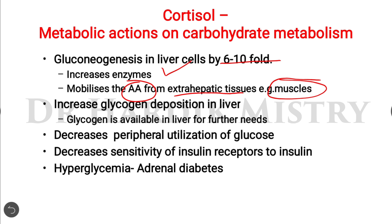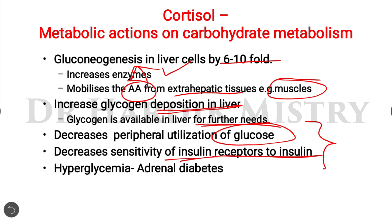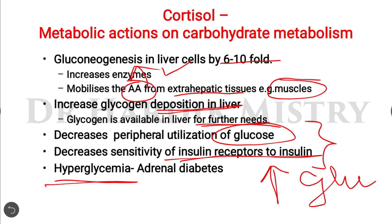These amino acids help in glucose synthesis. Secondly, cortisol increases glycogen deposition in the liver so glycogen is available for further needs. It decreases peripheral utilization of glucose and decreases the sensitivity of insulin receptors to insulin. Both effects ultimately lead to increased glucose concentration — a condition known as hyperglycemia or adrenal diabetes. Cortisol is therefore also known as a diabetogenic hormone.